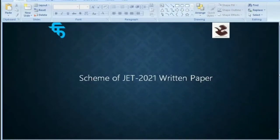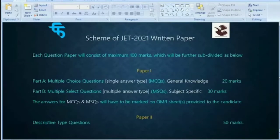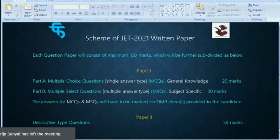Now the scheme of JET 2021 written paper. Please look at it very carefully. Each question paper will consist of maximum 100 marks, which will be further divided as below. There is going to be Paper 1 and Paper 2.